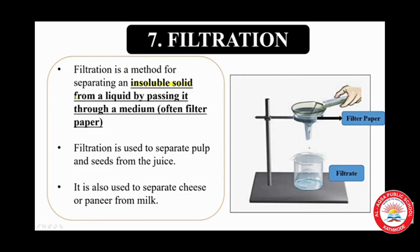Filtration is a method for separating an insoluble solid from a liquid by passing it through a medium — that is, filter paper. Filtration is used to separate pulp and seeds from juice, and also to separate cheese or paneer from milk. Insoluble solid means a solid that does not dissolve in water. So filtration is a method to separate insoluble solids — like pulp and seeds — from a liquid.